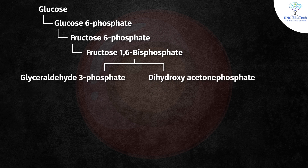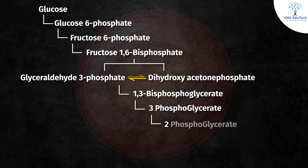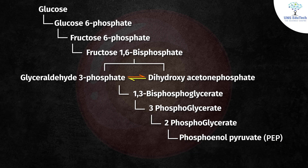This 6-carbon product is broken into two 3-carbon products: dihydroxyacetone phosphate and glyceraldehyde 3-phosphate, which are interconvertible. Glyceraldehyde 3-phosphate is then converted to 1,3-bisphosphoglycerate, then to 3-phosphoglycerate, then to 2-phosphoglycerate, then to phosphoenolpyruvate (PEP), and finally to pyruvate.